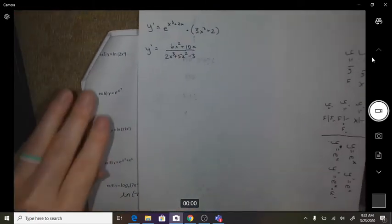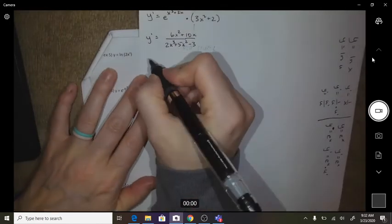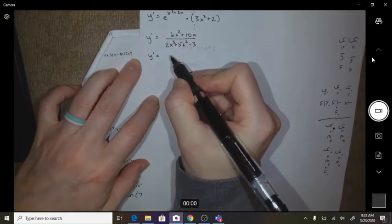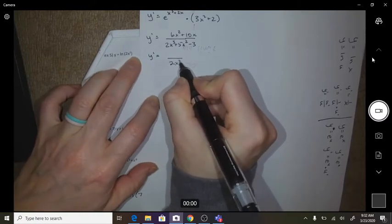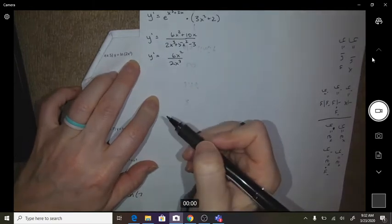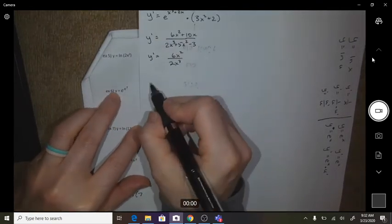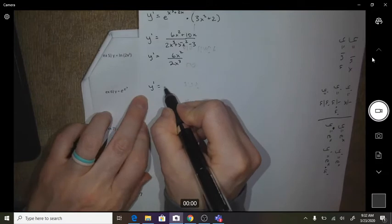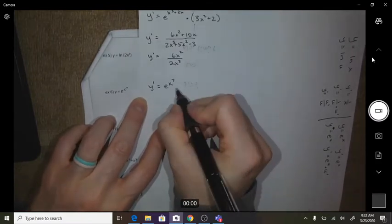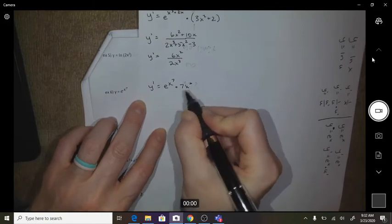Okay, some of these are very similar, so we'll just do them quickly. So here, your derivative would be 1 over 2x cubed, and then you'll have to times it by 6x squared. Number six, you repeat, e to the x to the 7th, and then times 7x to the 6th.